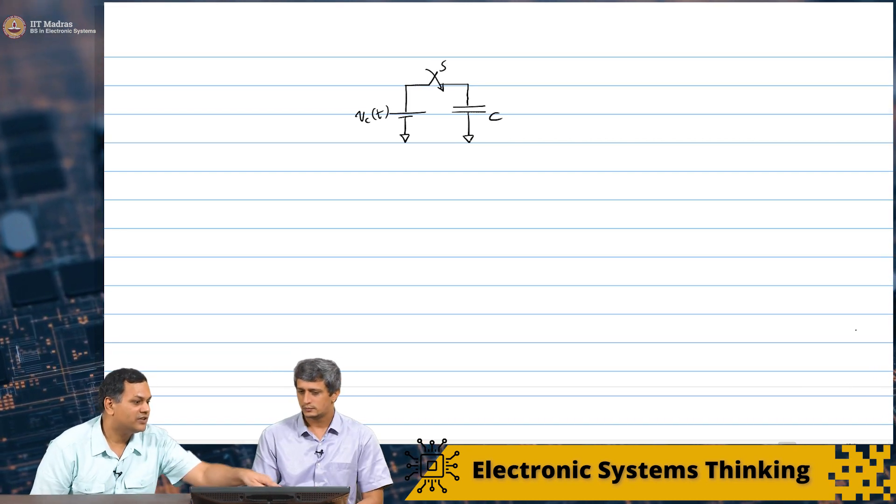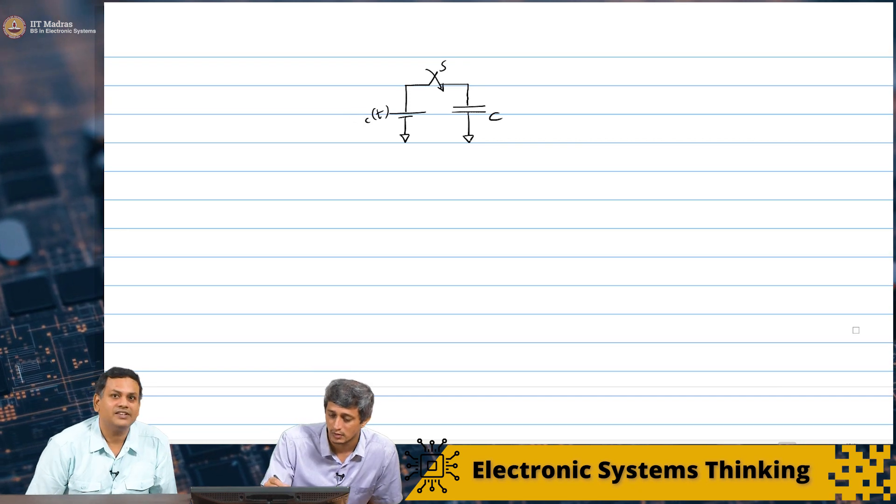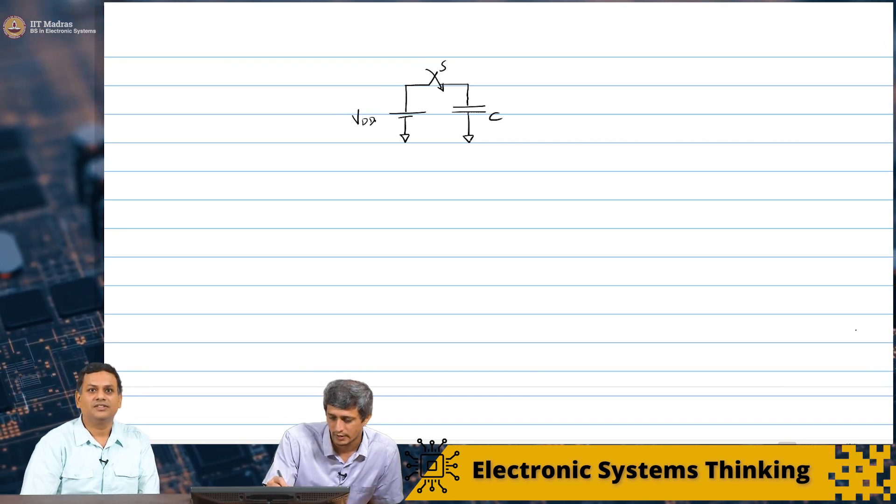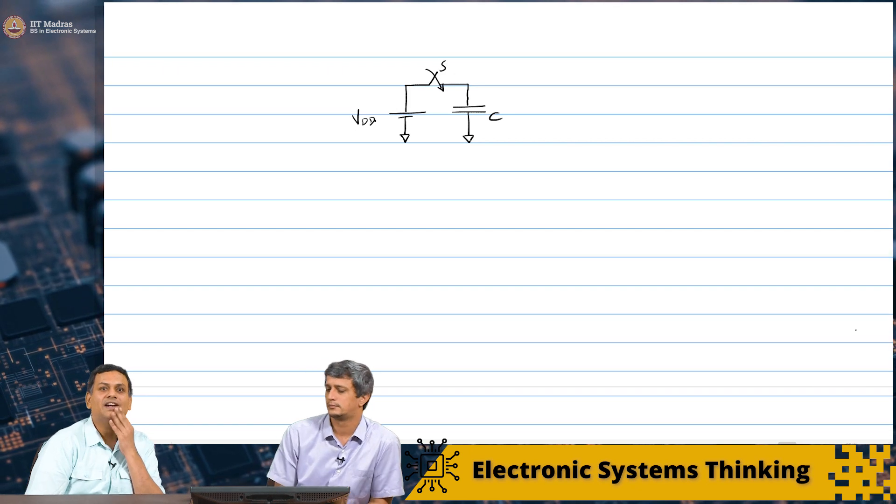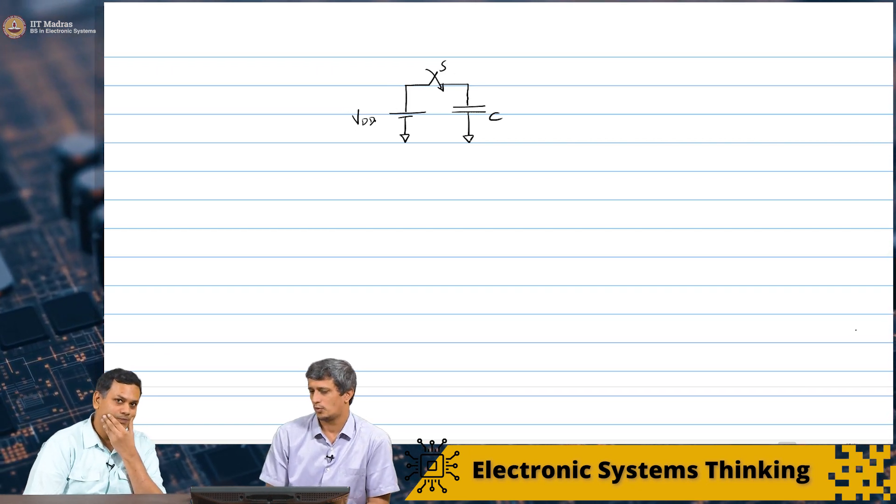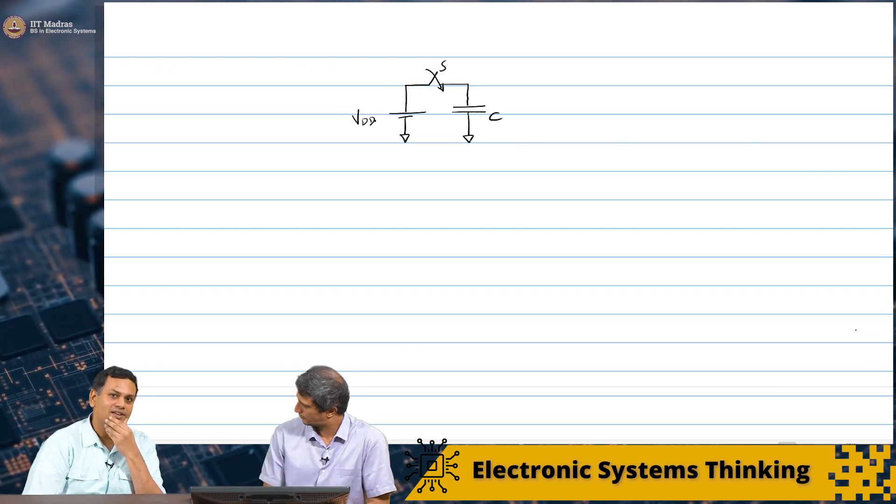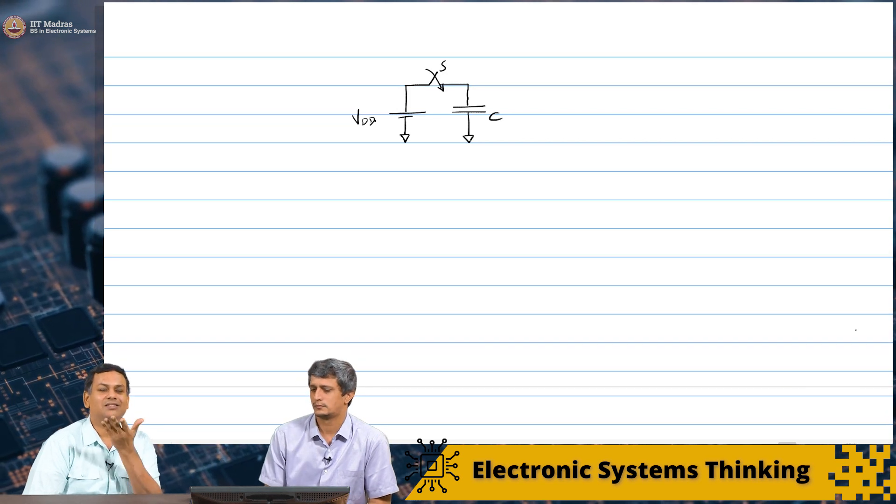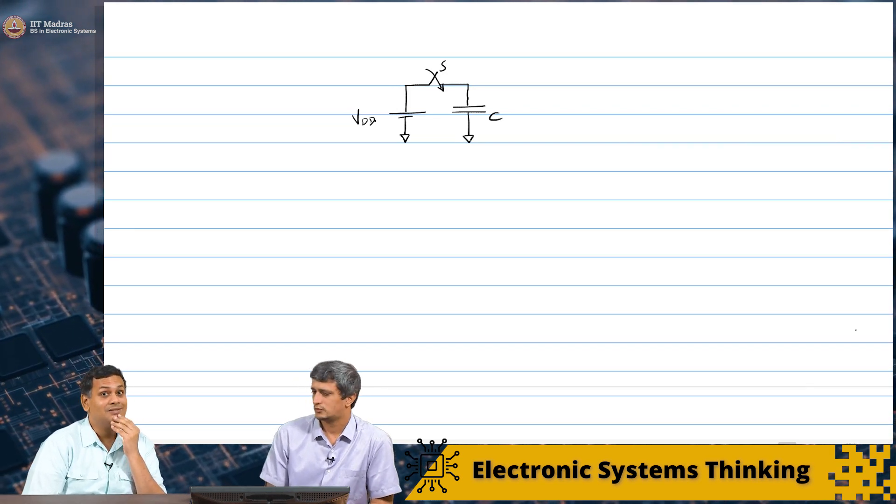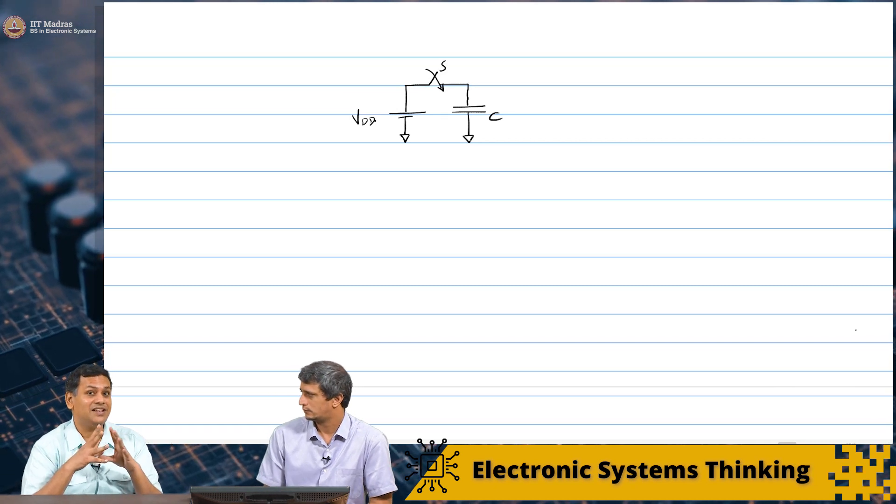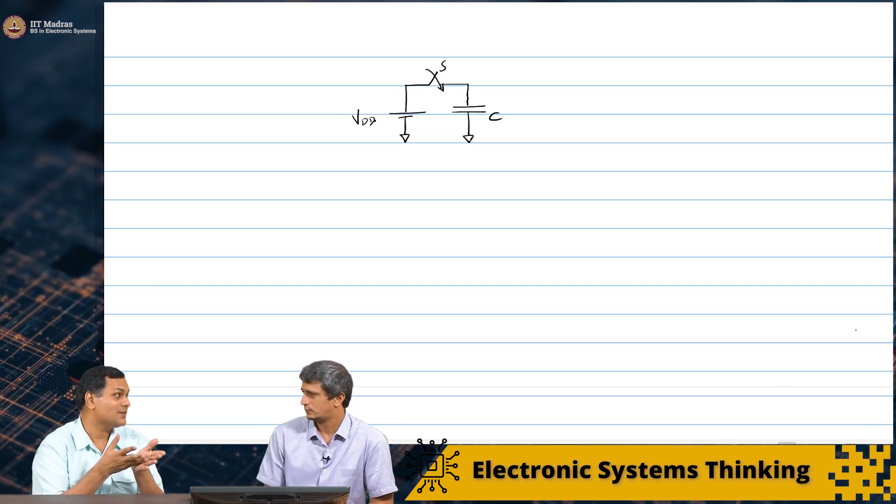Yes, ideal switch that is thrown at t equal to 0. Vc of t. So, you have a switch. Right. Oh no, the input is just some Vdd. Oh, sorry sir. Right. This is just Vdd. Right. So, you are throwing an ideal switch at t equal to 0. Exactly.